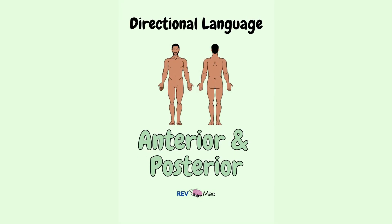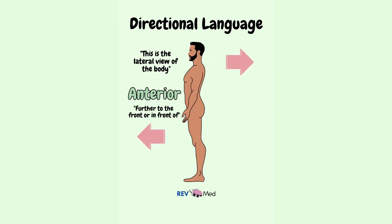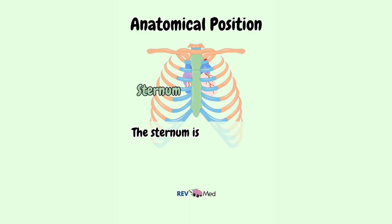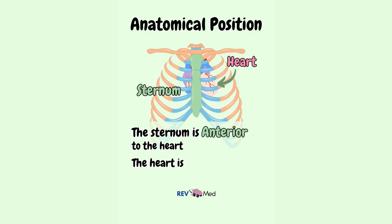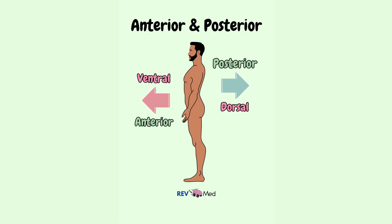Now for the terms anterior and posterior: anterior means further to the front or in front of. Posterior means further to the back or in the back of. So we could say that the sternum is anterior to the heart, or the heart is posterior to the sternum. Sometimes you'll see the words ventral and dorsal — don't be confused. Ventral just means anterior, and dorsal just means posterior.